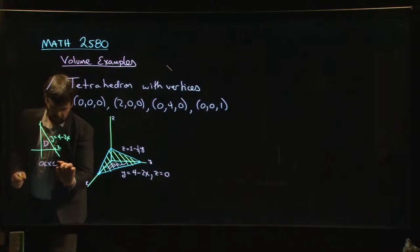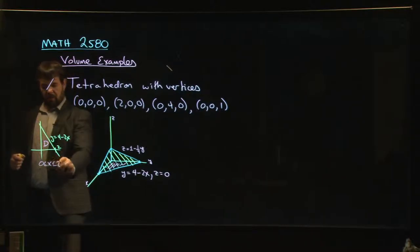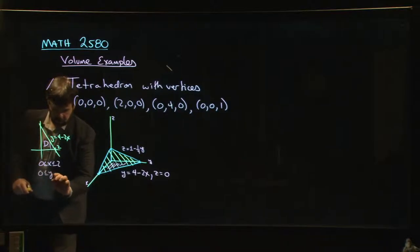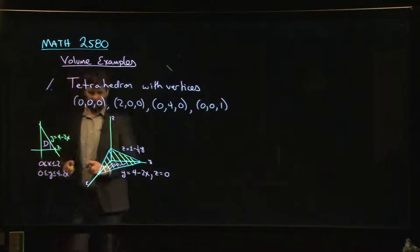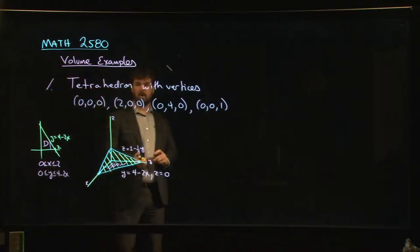And we can think of that as our region D in the XY plane. It's this triangle down here. And so we can see from this picture that we can describe this region as X goes from zero to two. And for each X value between zero and two, our Y values, they start here at zero, they go up until they hit the line. So Y is between zero and four minus two X.